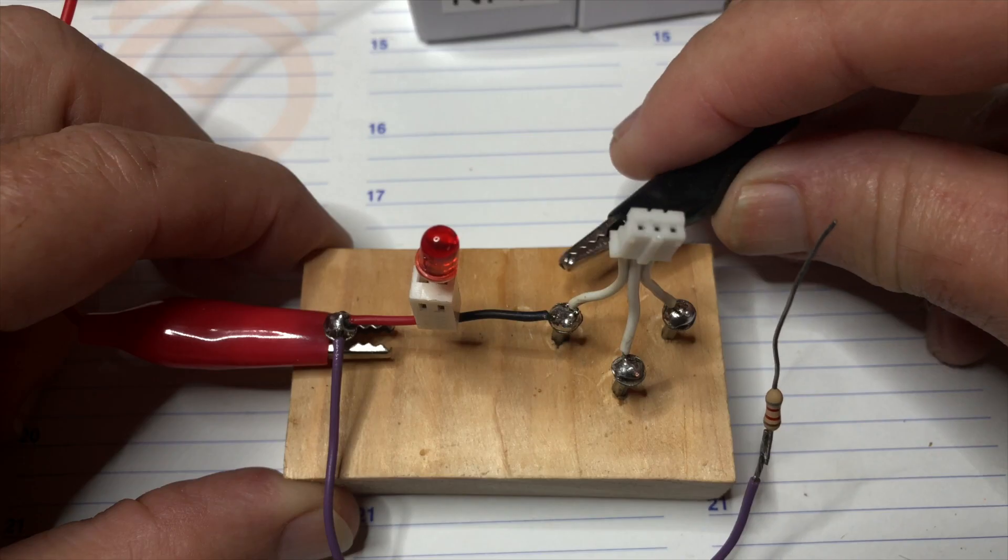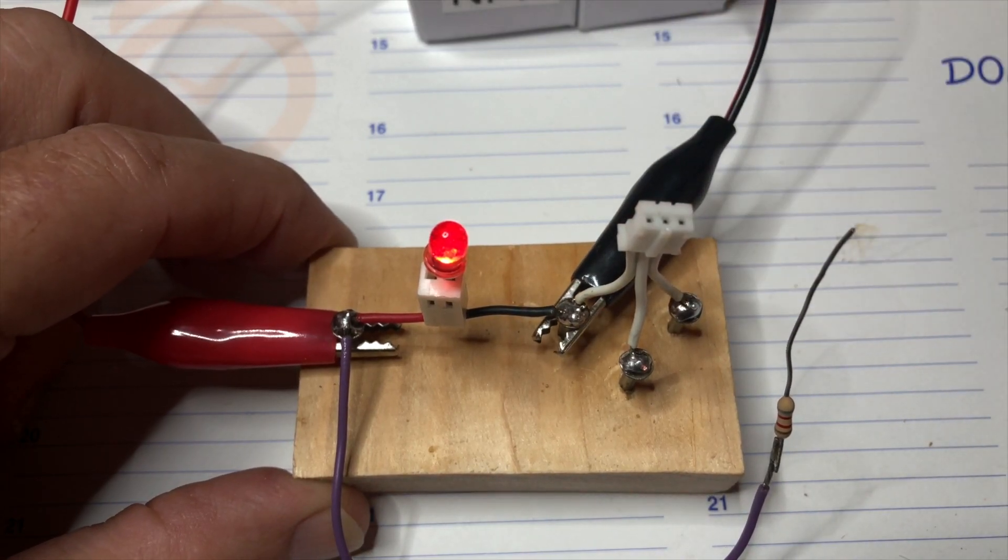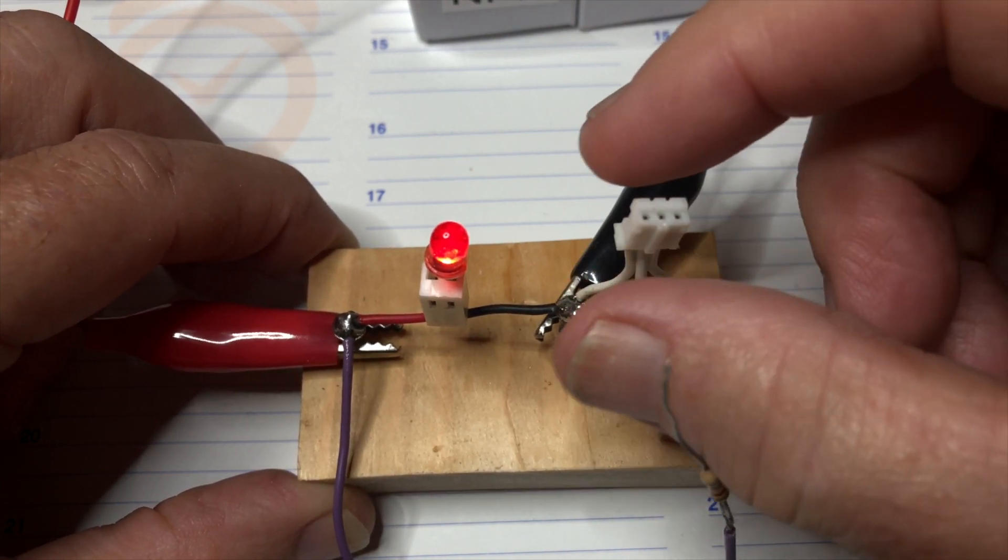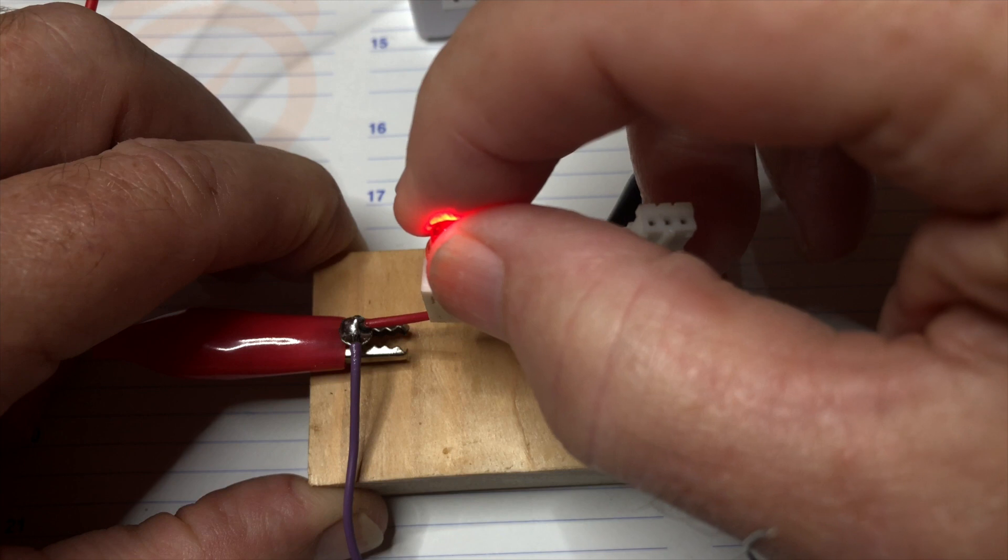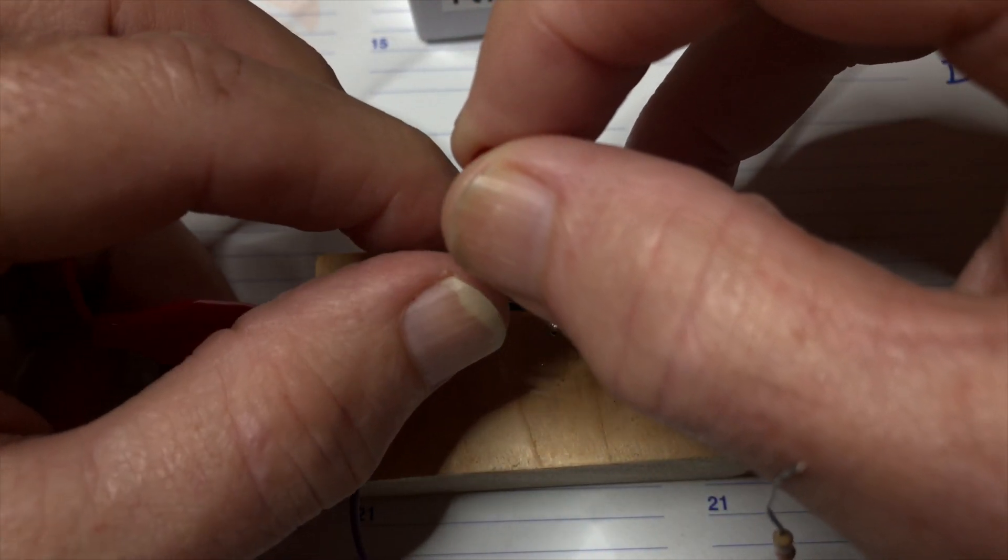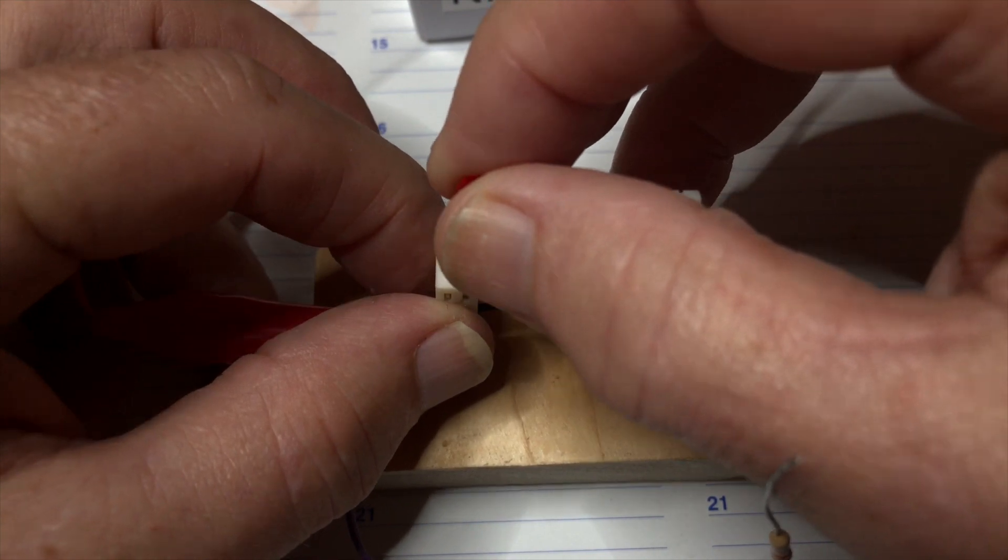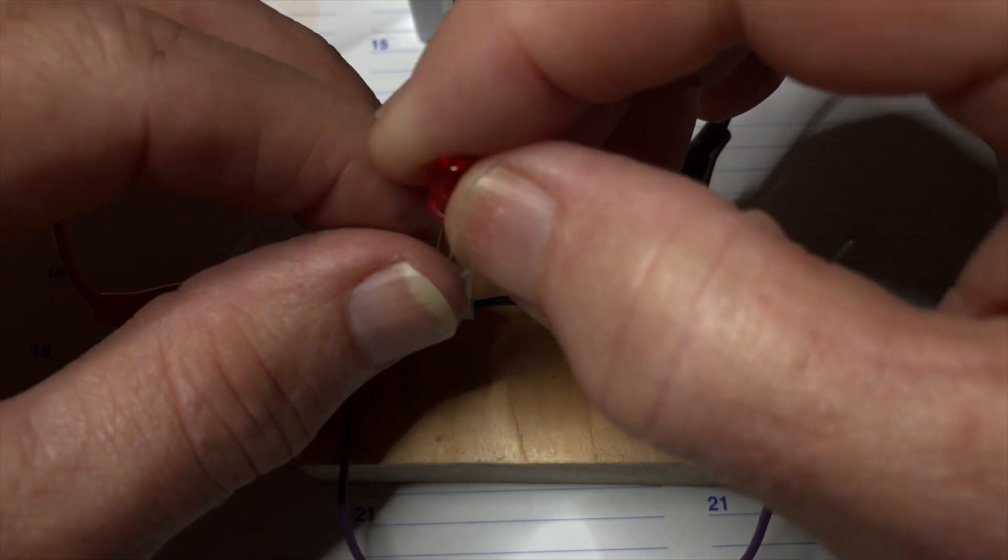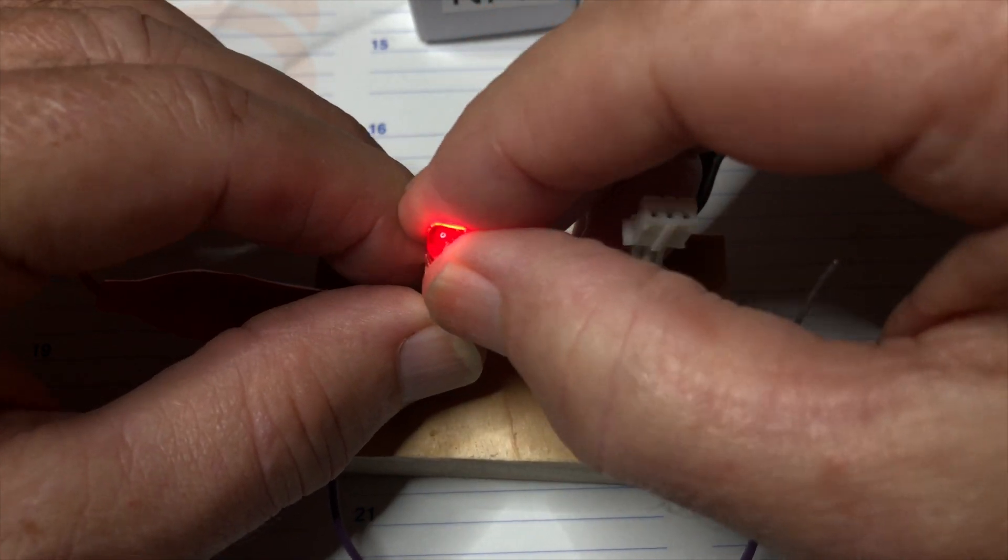An LED will light only when the voltage is applied in the forward direction of the diode. No current flows and no light is emitted if voltage is applied in the reverse direction.